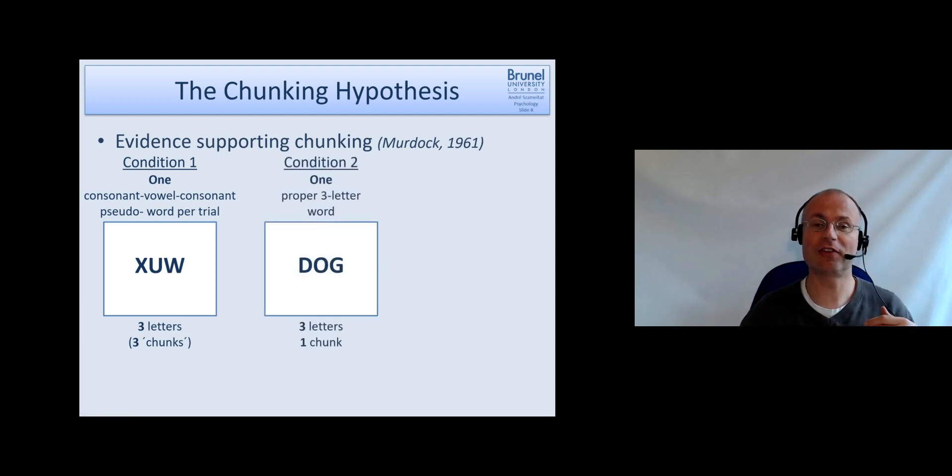The second condition, group two, where participants saw one proper three-letter word like dog for instance. So again we have the same information here, three letters in both cases. However, this time the three letters can be combined into one chunk. So the number of chunks differs but the amount of information is the same.